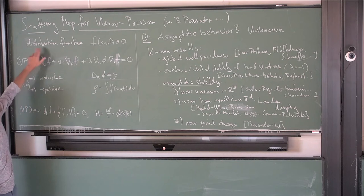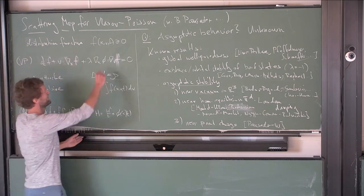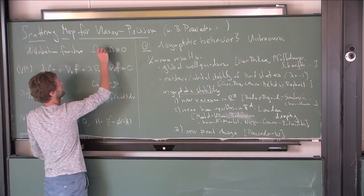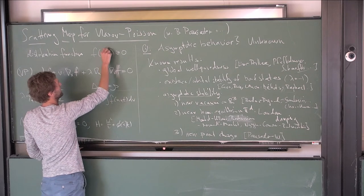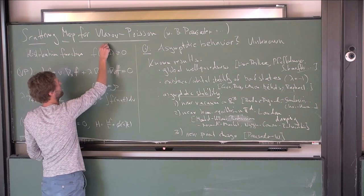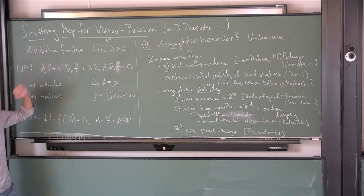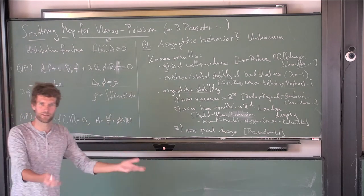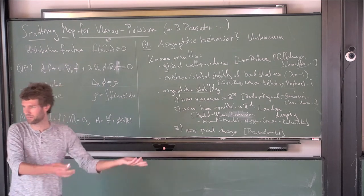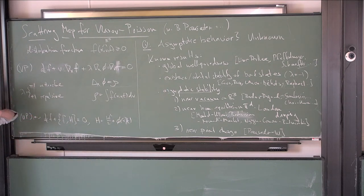The object we study is a distribution function defined on the phase space. We have two variables, x and v, both in R³. This distribution function can be thought of as having arisen from the many-body limit in a quantum setting — the classical limit, for example — and it satisfies the Vlasov-Poisson equation.